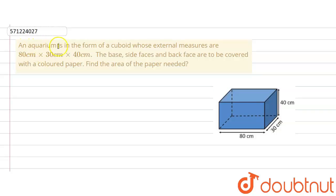The given question says that an aquarium is in the form of a cuboid just like the one shown in the figure whose external measures are 80 centimeter, 30 centimeter and 40 centimeter.